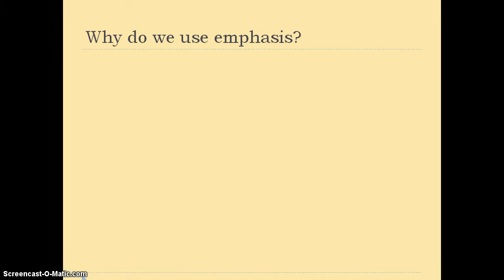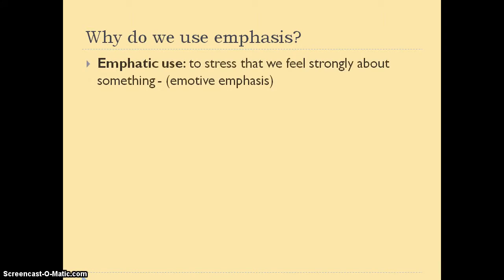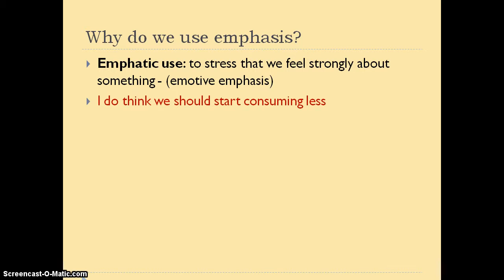Why do we use emphasis? Now we know that we emphasize with the auxiliaries, and if there is no auxiliary, we use 'do', 'does', or 'did' before the main verb. But what is the main aim of emphasizing? Well, first of all, we can emphasize just for emotion — to express that we feel strongly about something. For example, 'I do think we should start consuming less.' You can say 'I think we should start consuming less', which is a normal statement, but with 'I do think', you are strengthening the fact that you feel very strongly about it.